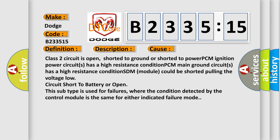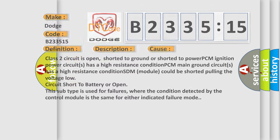This diagnostic error occurs most often in these cases: Class 2 circuit is open, shorted to ground, or shorted to power. PCM ignition power circuits have a high resistance condition. PCM main ground circuits have a high resistance condition. SDM module could be shorted, pulling the voltage low. Circuit short to battery or open. This subtype is used for failures where the condition detected by the control module is the same for either indicated failure mode.